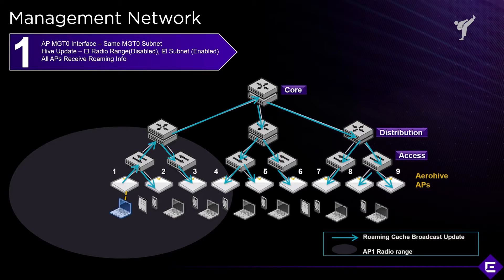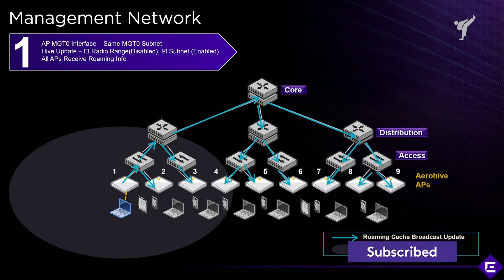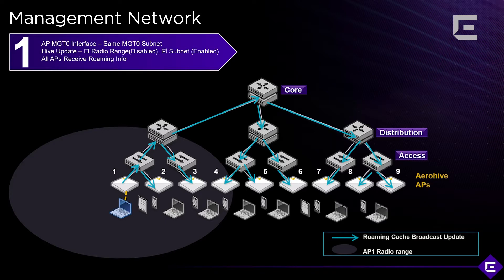Let's talk about some design considerations and how you can tweak the configuration for your deployment. Looking at the management subnet first — when we talked about cooperative control protocols, we mentioned a protocol called AMRP, Advanced Mobility Routing Protocol, which is used for all the APs to communicate with each other and enables sharing of information for client sessions, roaming cache, and everything needed for a client to successfully roam from one AP to another and keep their sessions up and running.